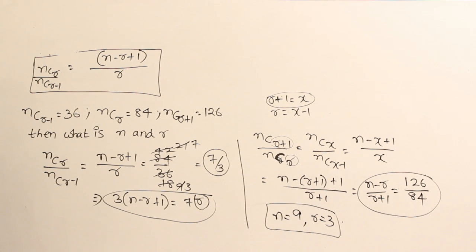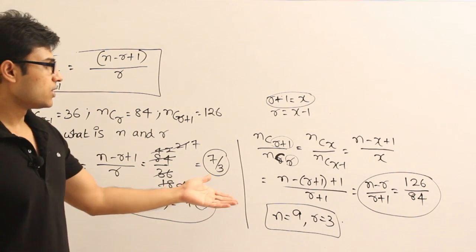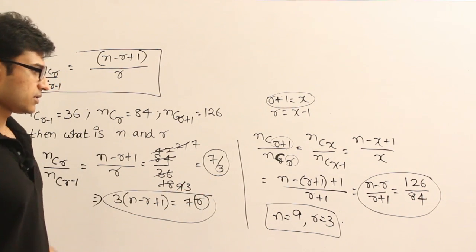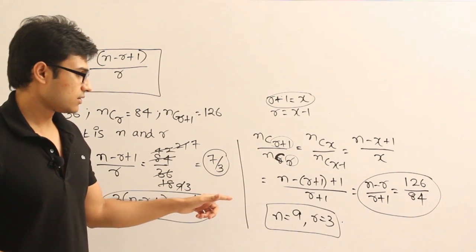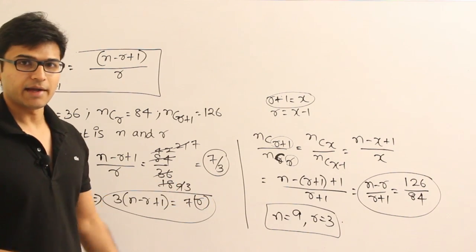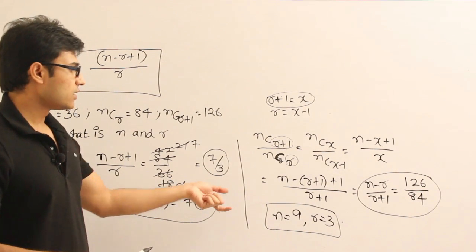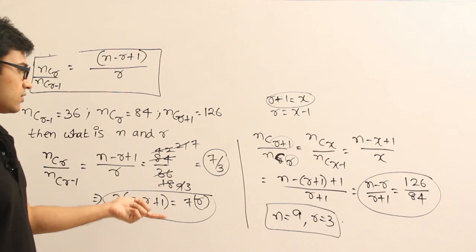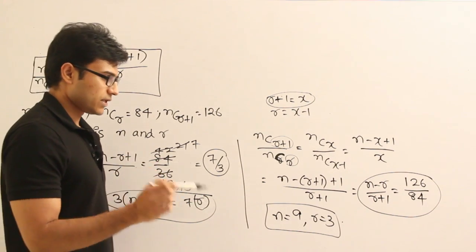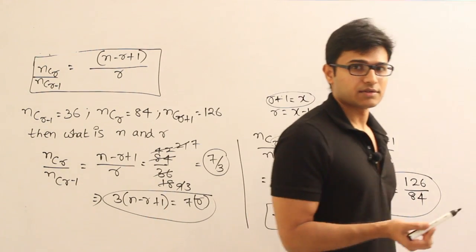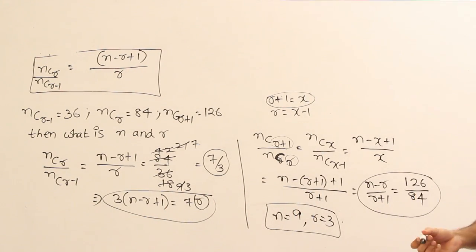It will be difficult to directly solve it. So another option is, if it is a multiple choice question, you can just take the choices and substitute them there and find it out. You need not do this method also. Definitely they are going to give it as fill in the blanks. Then you are supposed to solve it this way.